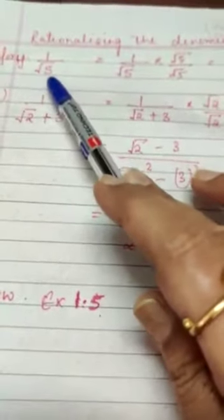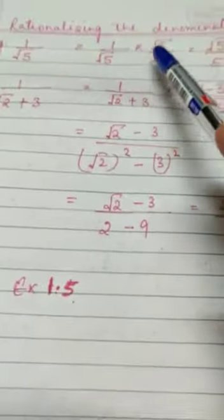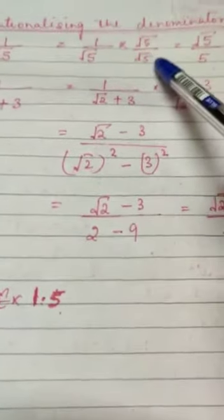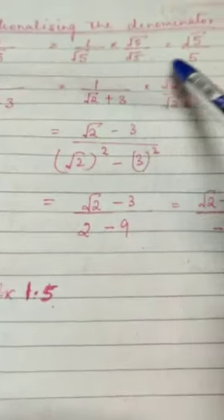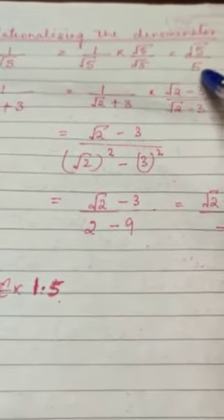We need to rationalize the denominator, that is, make the denominator a rational number. We multiply by root 5 upon root 5. The denominator becomes 5, while the numerator is root 5. Now this denominator is a rational number.